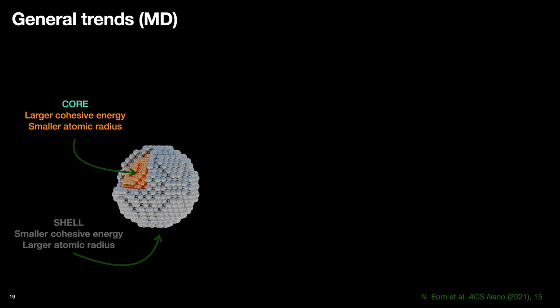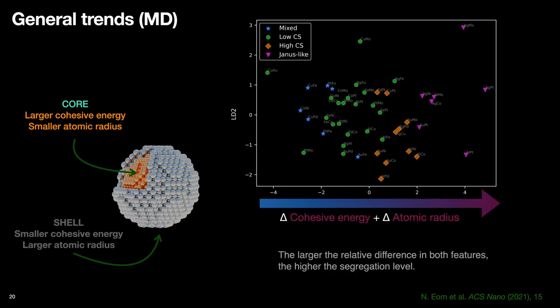And it was true for the majority of the combinations that we studied that the element with larger cohesive energy usually has the smaller atomic radius. And the larger the relative difference in both features, the higher the segregation level.